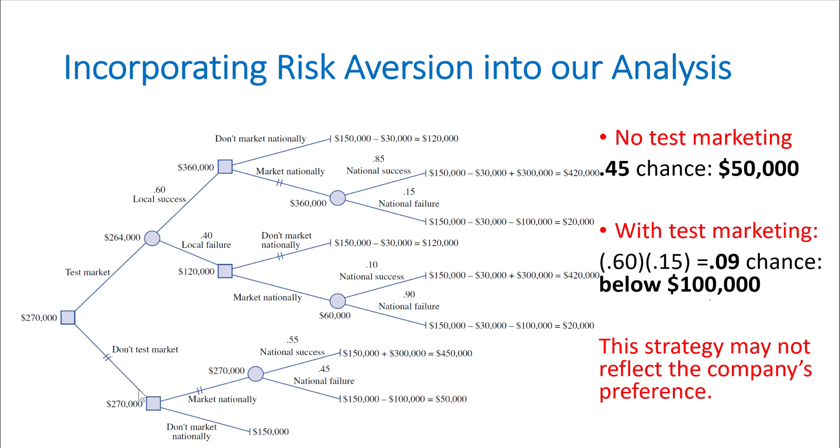One issue that we have here is that although it has the highest expected value, if you go through this path there is still a 45% chance that our asset position decreases from $150,000 to only $50,000. For a company or individual who is very risk averse, this may not sound very pleasing.